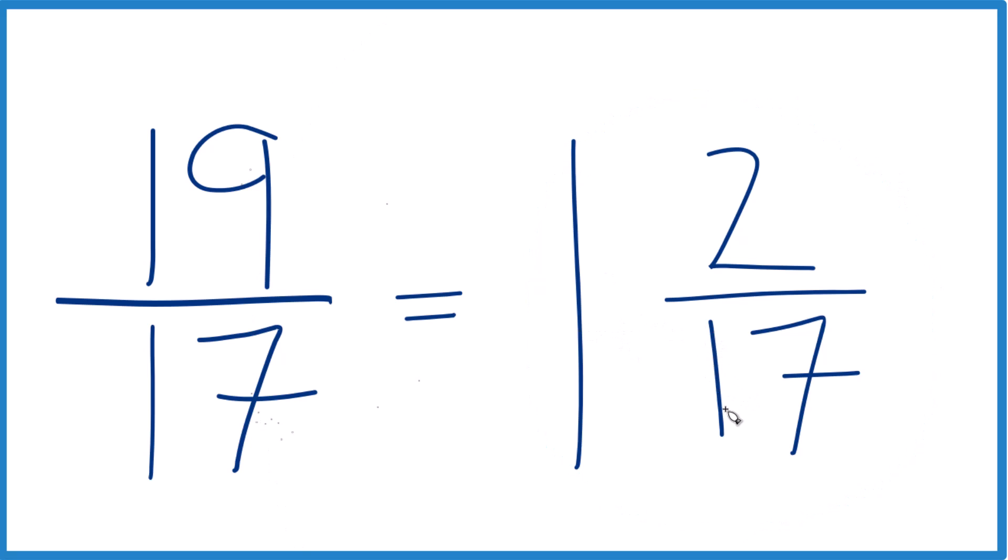Because 1 times 17 is 17, 17 plus 2 is 19. Keep the denominator the same. This is Dr. B. Mr. Cete. Thanks for watching.